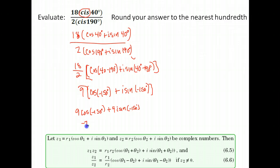So I do 9 times the cosine of negative 150 degrees, gives me negative 7.79, plus 9 times the sine of negative 150 is negative 4.5, and we still have that i. So our answer, rounded to the nearest hundredth, is negative 7.79 minus 4.5i. There are exact values for that also we could have calculated, but they asked us to round.